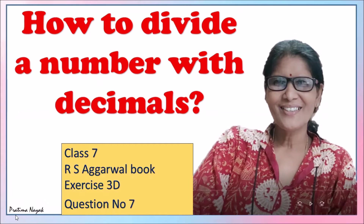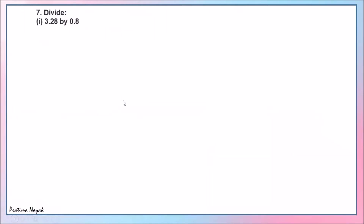Now divide 3.28 by 0.8 — this is the first part. The key trick is: first make the denominator a whole number. There is one digit after the decimal, so I'll multiply by 10 in both numerator and denominator. It will become 32.8 over 8. Now it's very easy to divide.